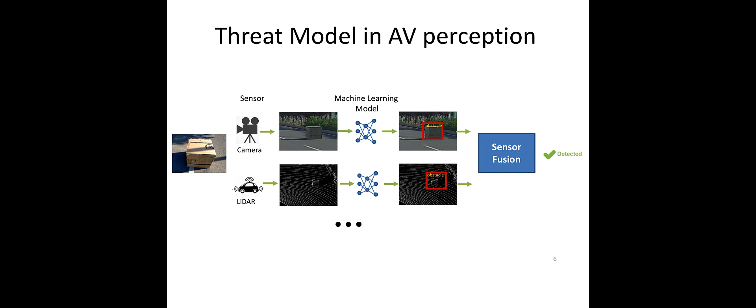First, let's look at the threat model that will be discussed throughout this talk. Basically, whether it's a single sensor or a fused sensor system, the goal of an attacker is to generate a so-called physical realistic adversarial object. When such an object is given to any sensor, the output will either be adversarial targeted labels, or the sensor will simply ignore the object, causing the car to crash into it with severe consequences.